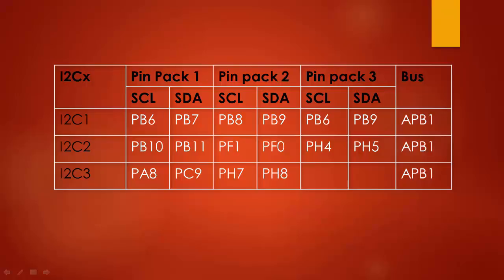The STM32F4 has up to three I2C peripherals, and each one has at least two pin packs. The pins used for each I2C peripheral are described in this table. I2C1 functionality can be brought out on three different GPIO pin packs. The first pin pack is PB6 and PB7, where you can bring out the serial clock of I2C1 on PB6 and the data line on PB7.